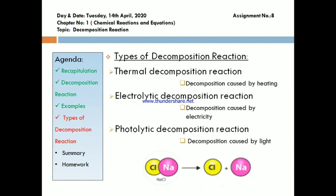Now let's come to the types of decomposition reaction. We will study three types: thermal decomposition reaction, electrolytic decomposition reaction, and photolytic decomposition reaction. The decomposition which is caused by heating is known as thermal decomposition reaction. Example: when you heat calcium carbonate, it splits into calcium oxide and carbon dioxide.